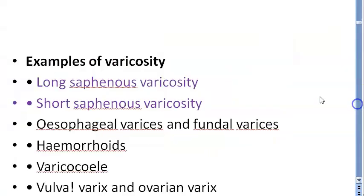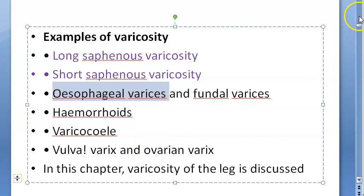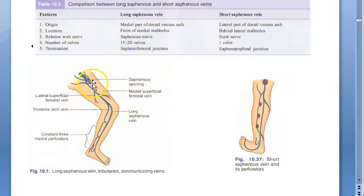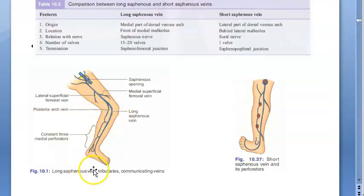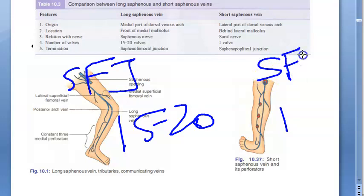While varicosity can occur elsewhere (e.g., oesophageal varices), here we focus on the lower limb. The long saphenous vein originates from the medial part of the dorsal venous arch and runs in front of the medial malleolus; the short saphenous originates from the lateral part and runs behind the lateral malleolus. The long saphenous has 15–20 valves; the short has only one. Both terminate at the saphenofemoral junction (SFJ).